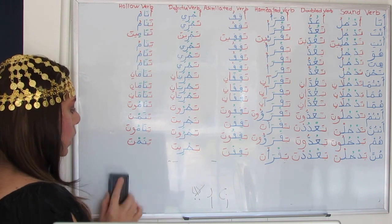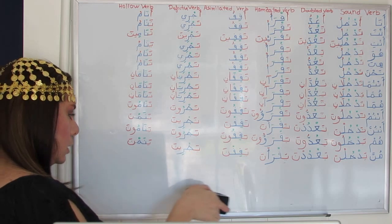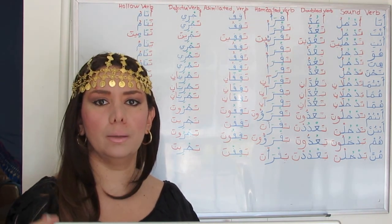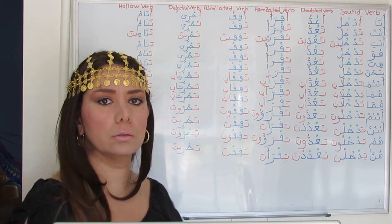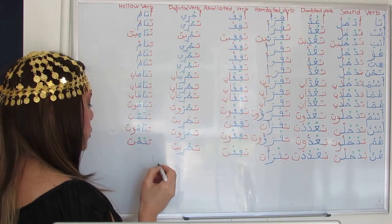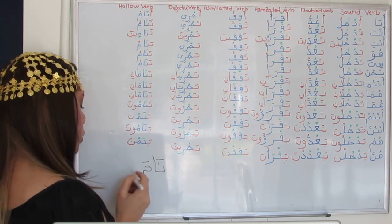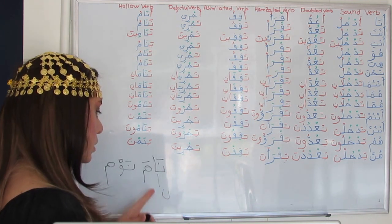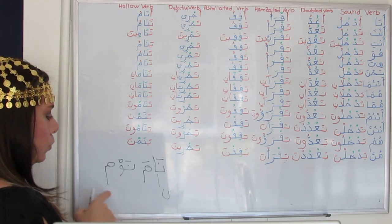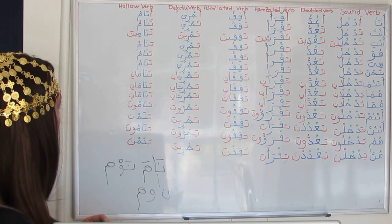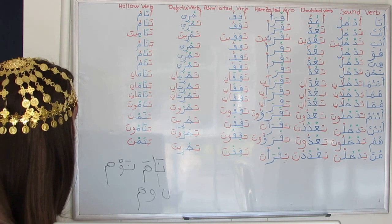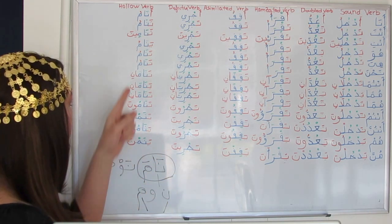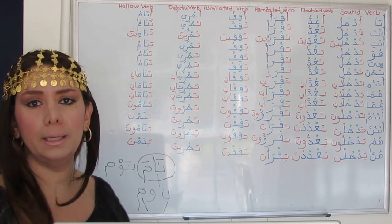The hollow verb has a weak consonant — Waw or Ya, the long vowels — in the middle of the root. These are called weak letters because they may act as a long vowel or as regular consonants. The stem is 'naama' — to sleep. The verbal noun is 'noom.' The root is Noon, Waw, Mim — since Alif cannot be part of a root, we extract it from the verbal noun.